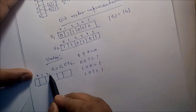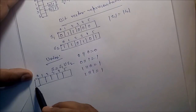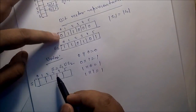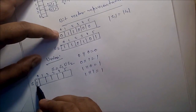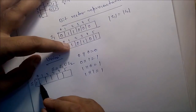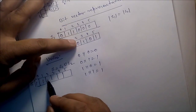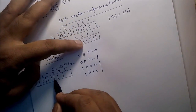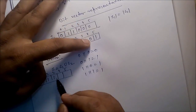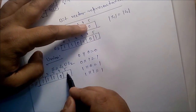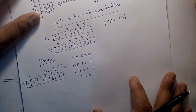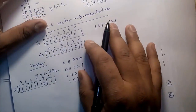Applying OR bit by bit across the vectors: 0 OR 0 is 0, 1 OR 1 is 1, 1 OR 0 is 1, 0 OR 1 is 1, 1 OR 0 is 1, 0 OR 0 is 0, 0 OR 1 is 1, 1 OR 0 is 1. This gives us the union operation result.